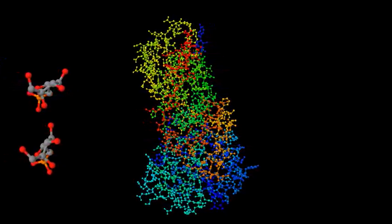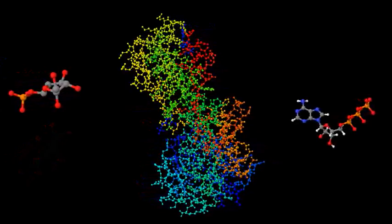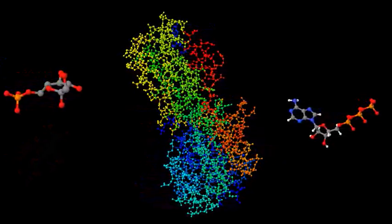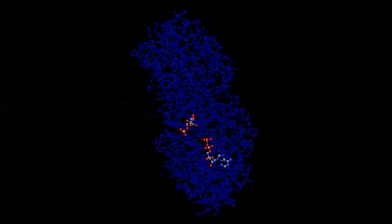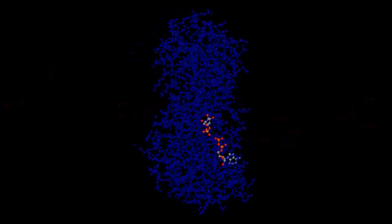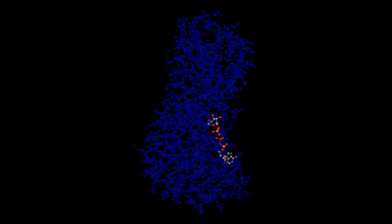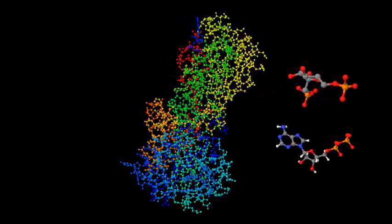This is the step 3 enzyme, phosphofructokinase. It captures the molecule we just made, as well as another ATP molecule. Then it transfers a phosphate group from the ATP to the fructose 6-phosphate, producing fructose 1,6-bisphosphate and another ADP molecule.